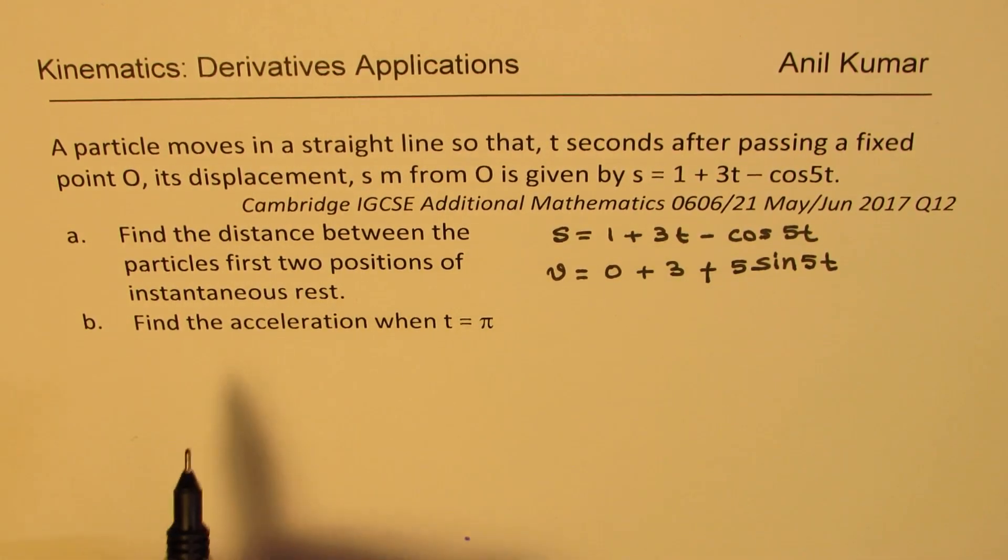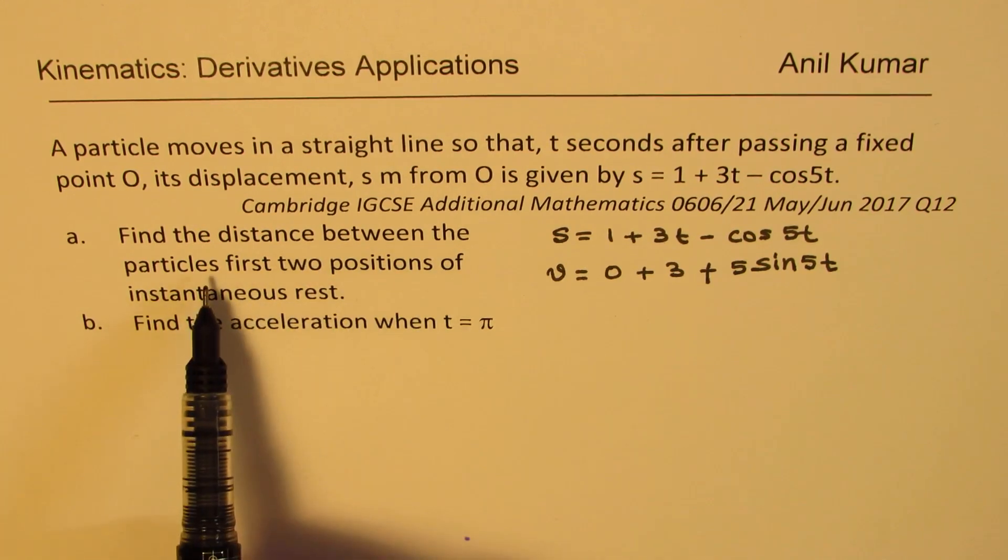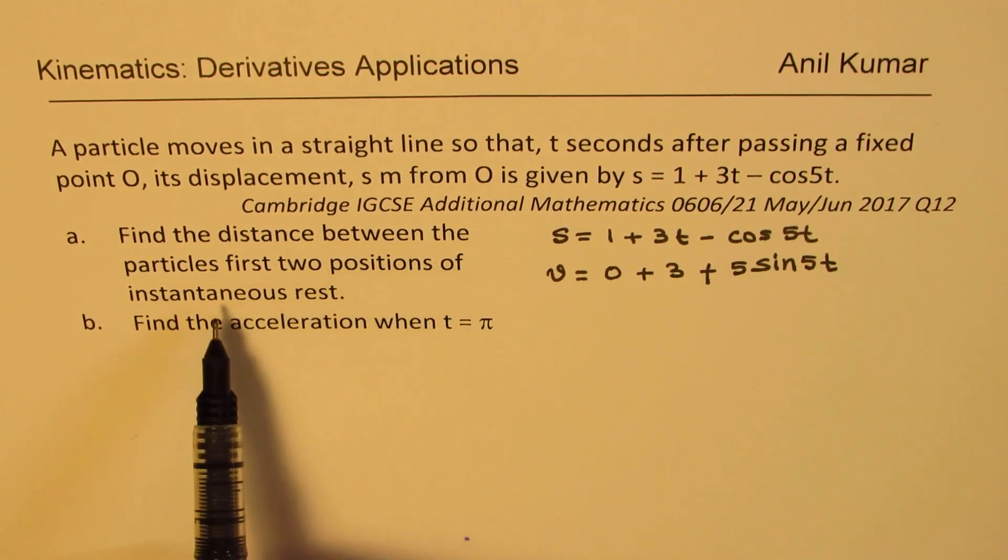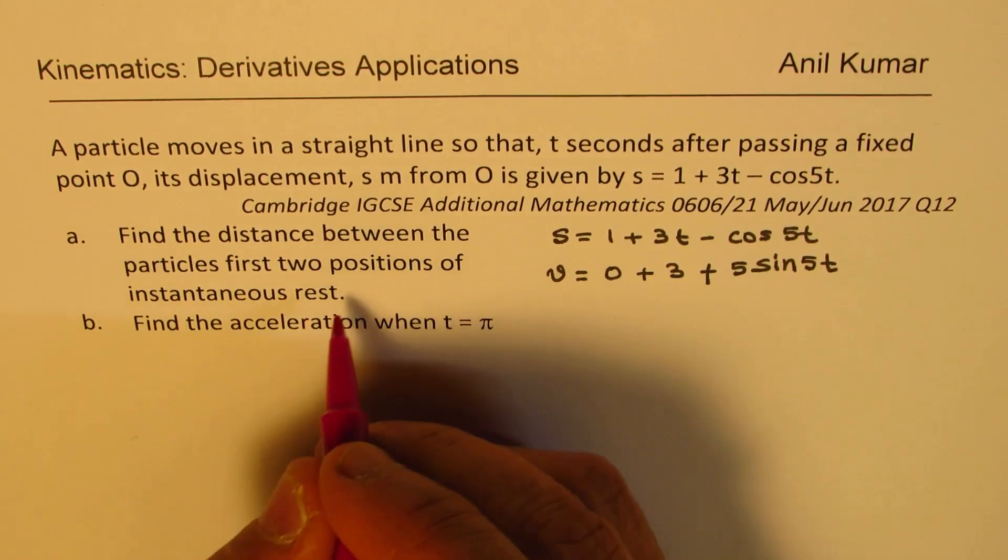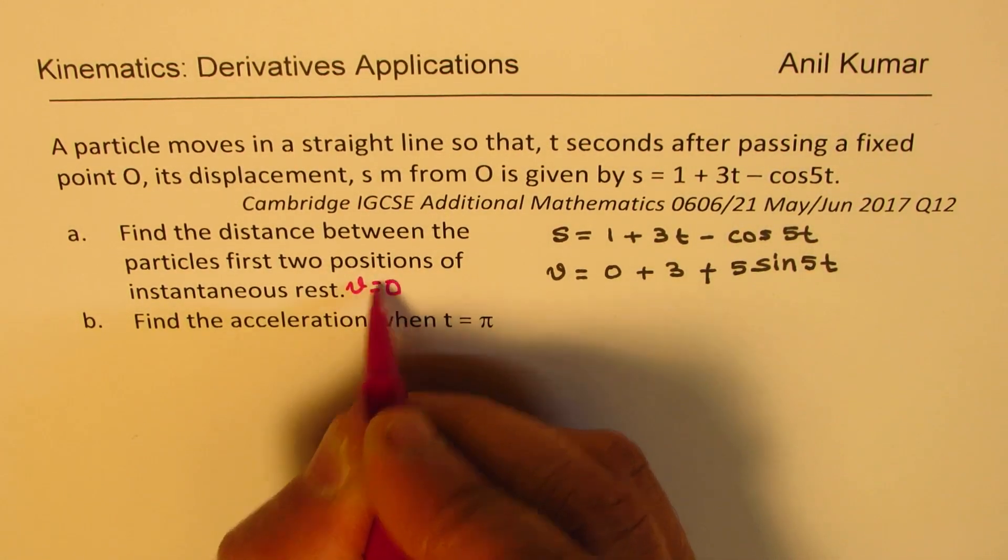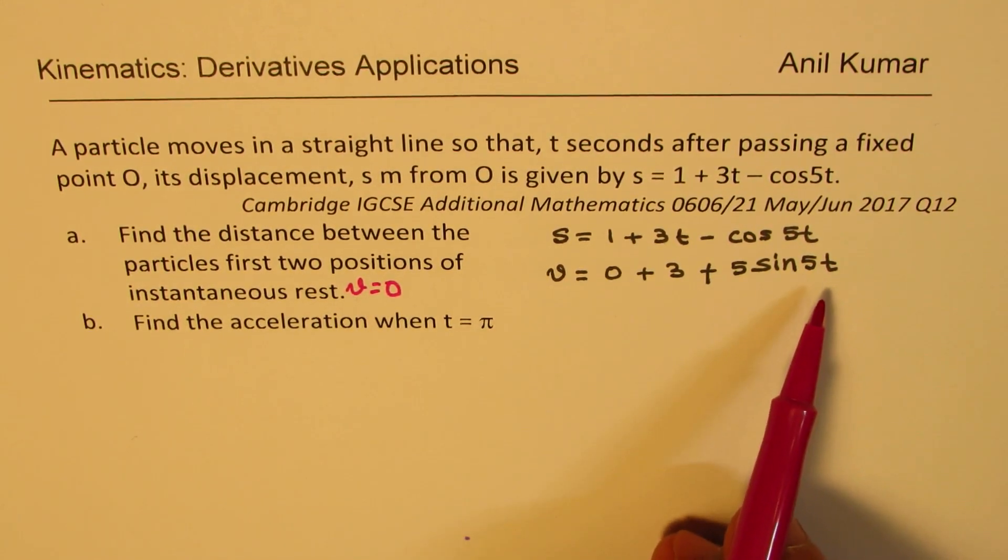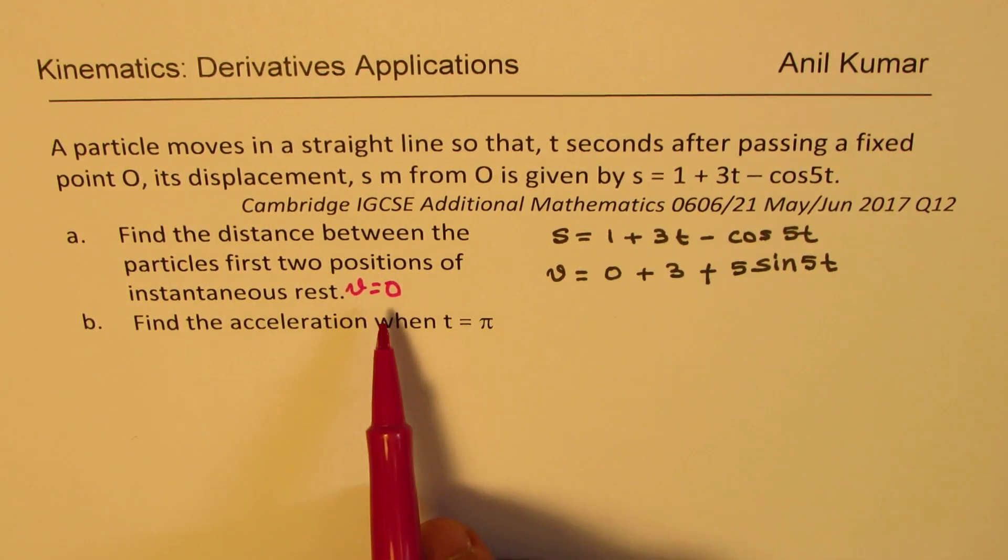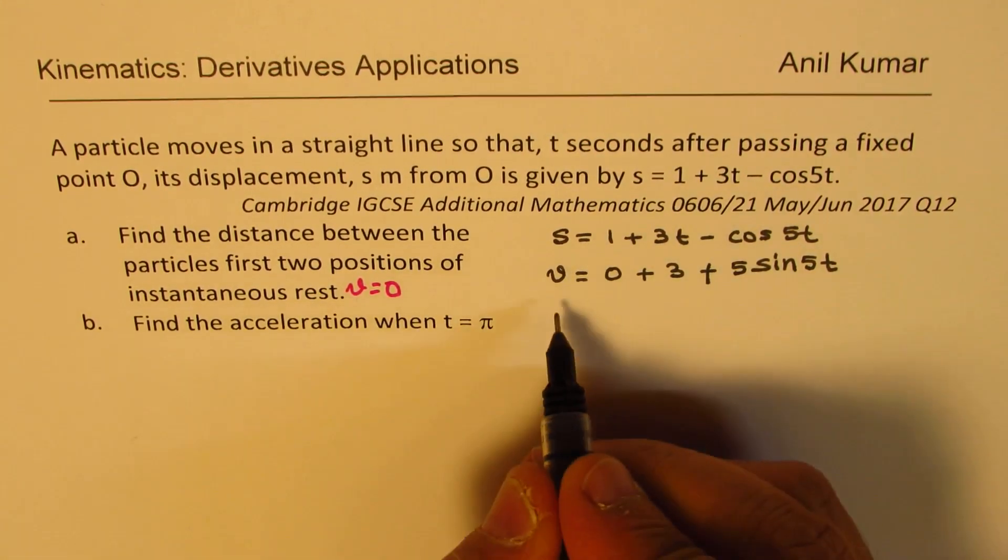When we are saying find the distance between the particles first two positions of instantaneous rest, instantaneous rest means that the velocity should be equal to 0. So we need to figure out when is the velocity 0, and then for that time we'll find the displacement. For velocity of 0, let me equate this as 0.